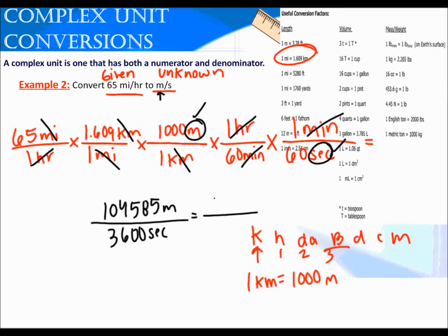104,585 meters. I multiply everything on the bottom and I get 3600 seconds. I divide that in my calculator to get a final answer of 29 meters per second. Yes, sig figs do matter, so I want to double check that. My given has two sig figs, so my answer needs two sig figs because all of my conversion factors are infinite.